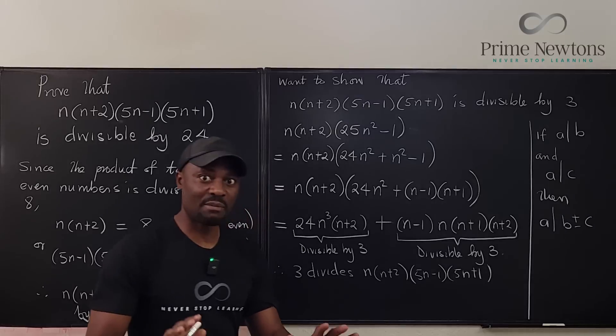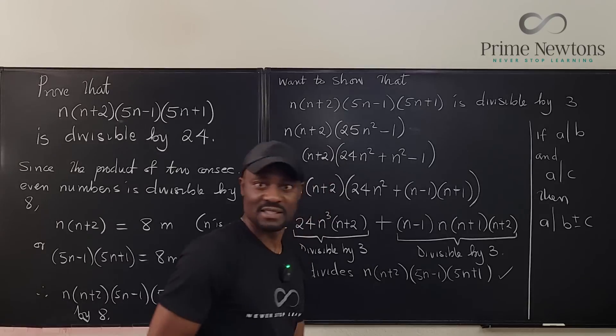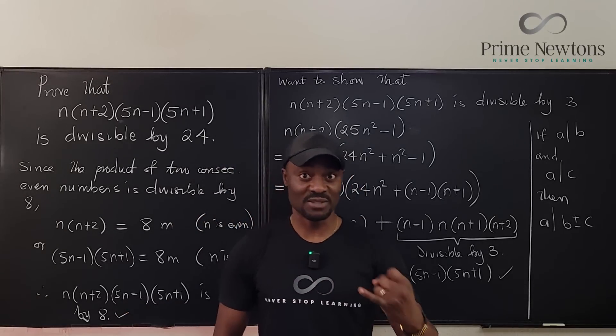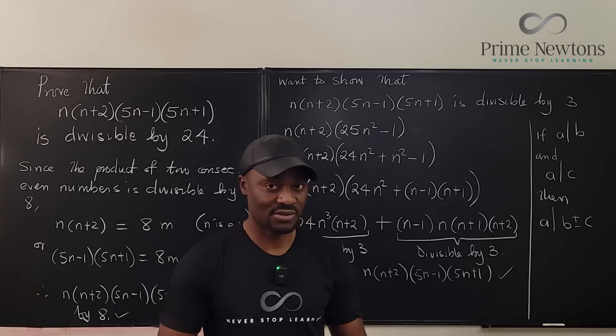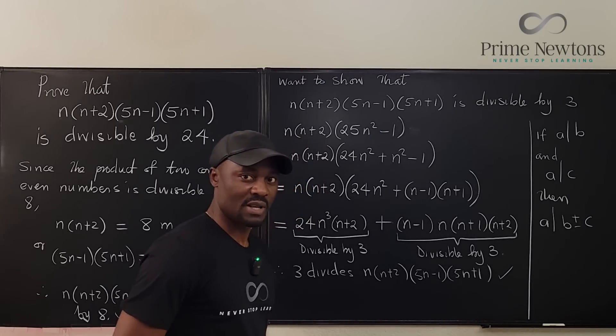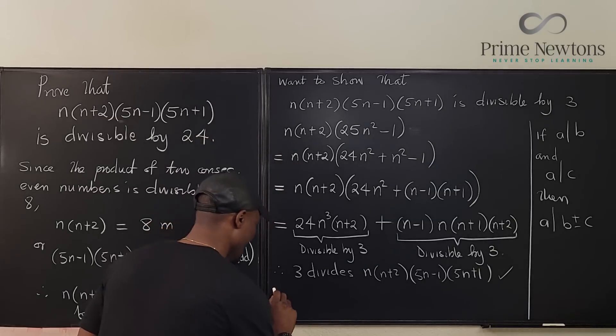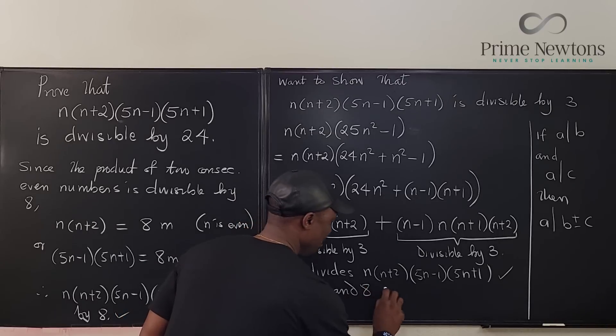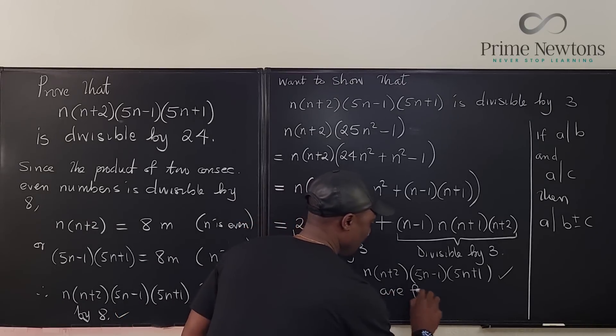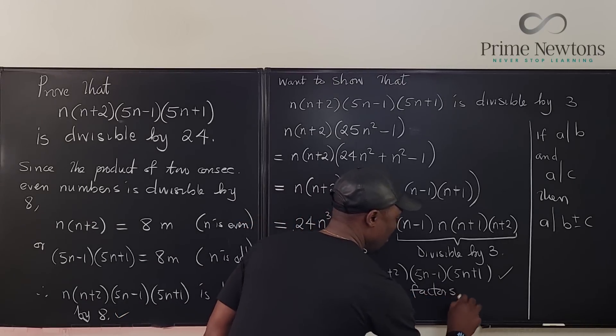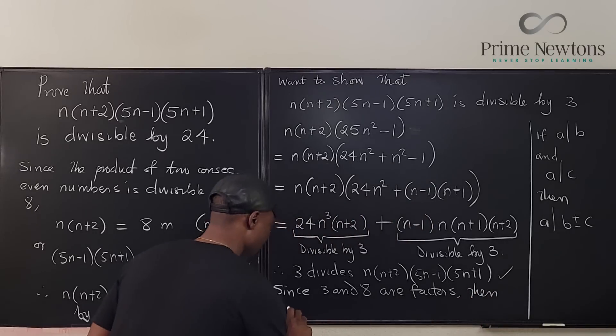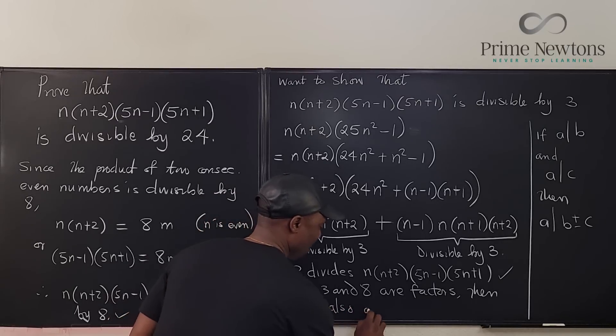So we have established two things. This part, 3 divides it. We've already established this also, 8 divides it. So because 3 and 8 are factors, 24 must also be a factor. Since 3 and 8 are factors, 24 is also a factor.